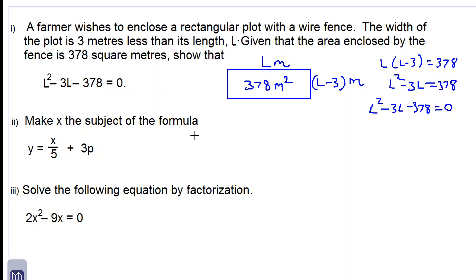Part 2 make X the subject of the formula. Right now Y is the subject of the formula. Let's subtract 3P from both sides so we have X over 5 is equal to Y subtract 3P and now let's multiply both sides by 5. So we have X is equal to 5 times Y minus 3P. X is now the subject of the formula.